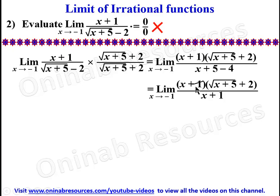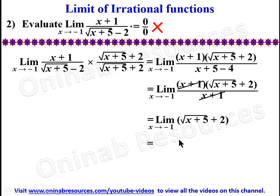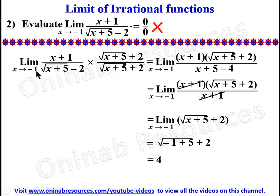We can see that (x plus 1) cancels (x plus 1), so our limit as x tends to negative 1 is root(x plus 5) plus 2. Substituting directly: root(negative 1 plus 5) plus 2. Negative 1 plus 5 gives 4, root 4 is 2, and 2 plus 2 gives 4. So the limit is 4.